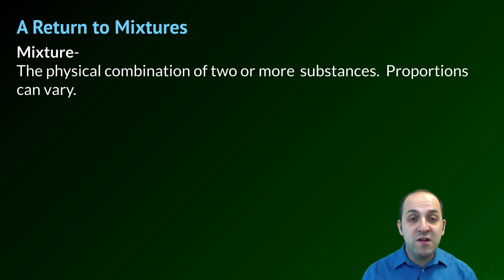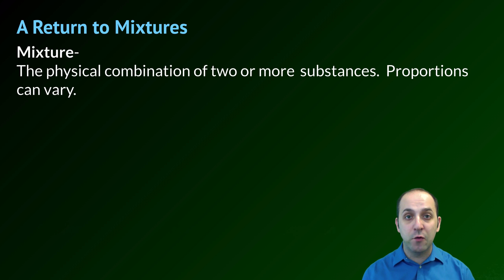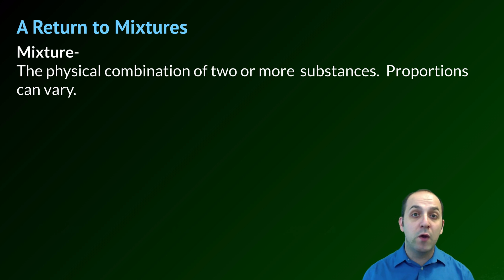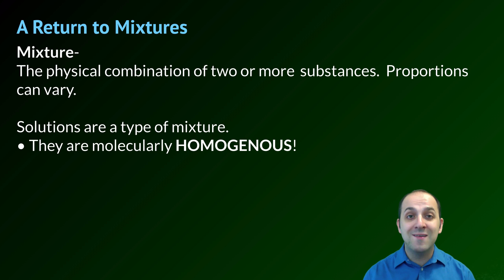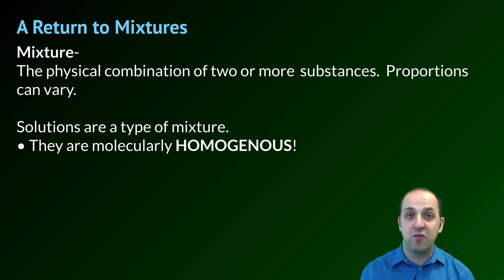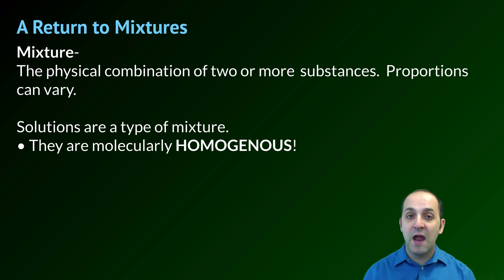A solution is just a special type of mixture. If we remember back to unit two, we talked about the four major types of substances — we had pure substances, and then we had mixtures. Solutions are one type of mixture — they're the homogeneous mixtures. All homogeneous mixtures are solutions, and all solutions are homogeneous mixtures.